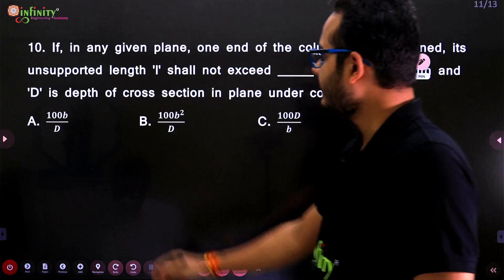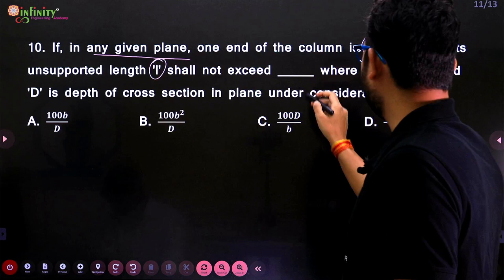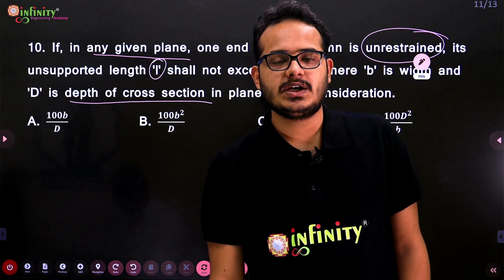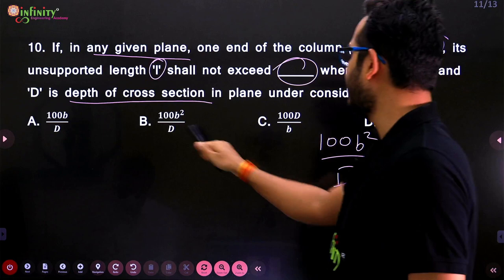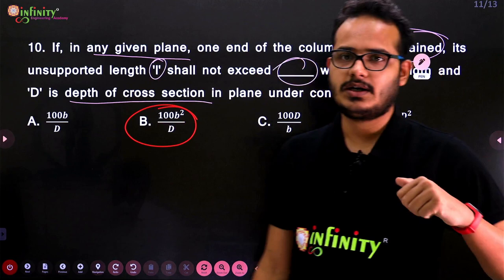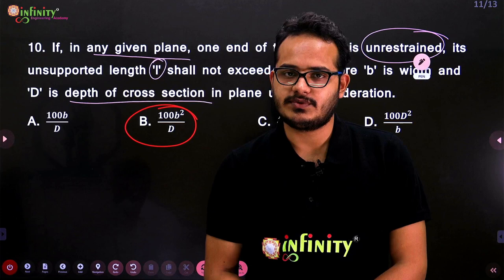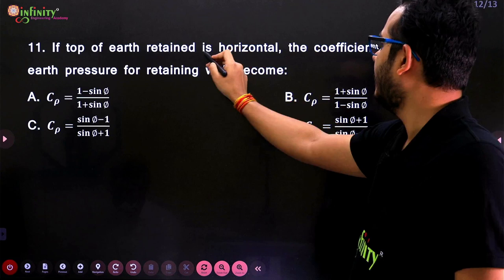Next question: If in any given plane one end of a column is unrestrained, its unsupported length L shall not exceed — where b is width and d is depth of cross-section. The answer is 100b²/d. This value varies with end conditions, but in this specific case the answer is 100b²/d, and the answer is (b).